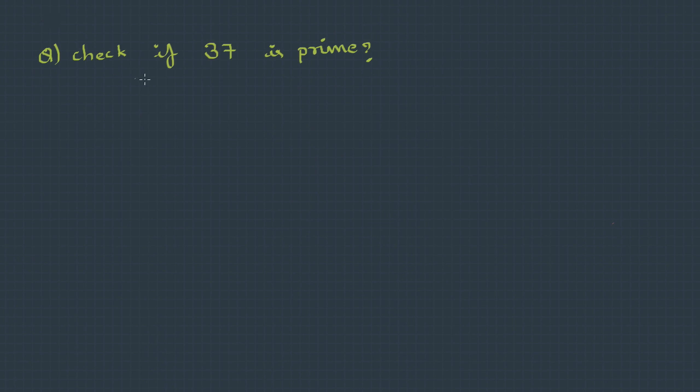Here we have a question: check if 37 is a prime. Let's assume that this is a composite number. We already know that for a composite number it will have some prime divisors less than the root of 37.